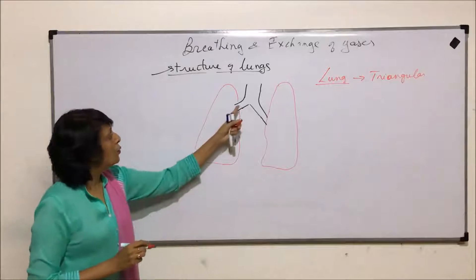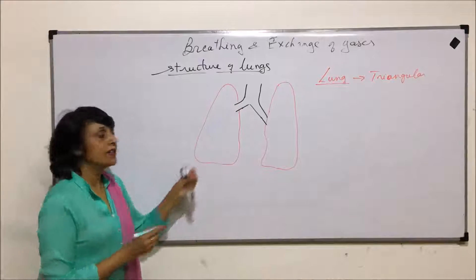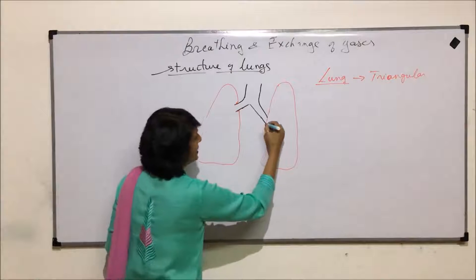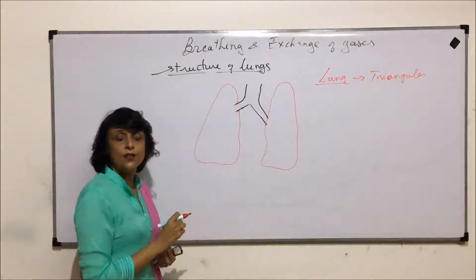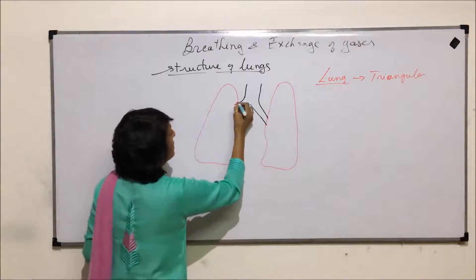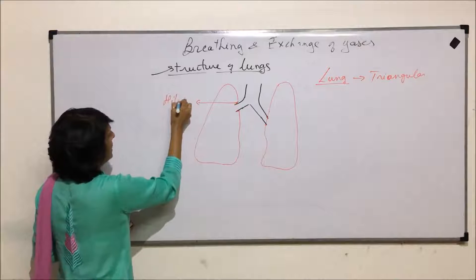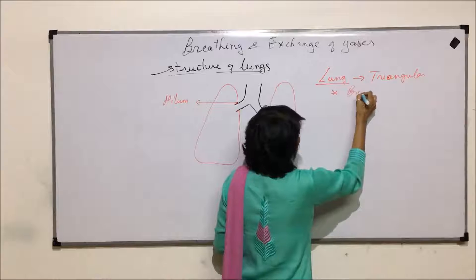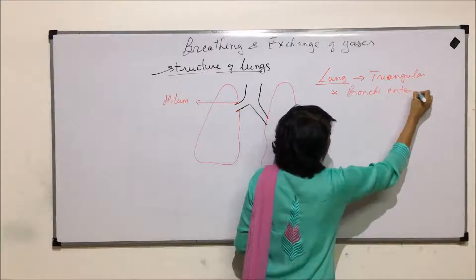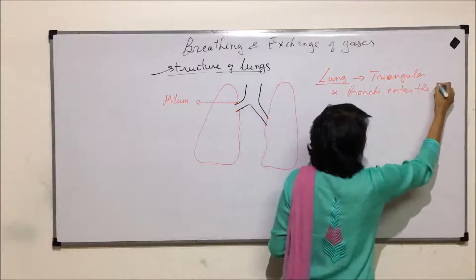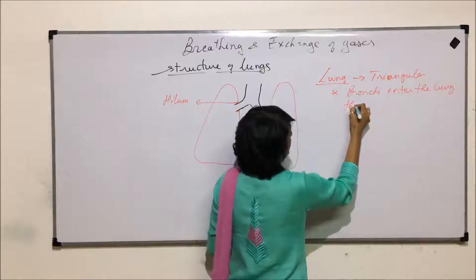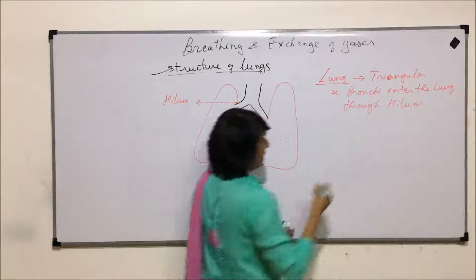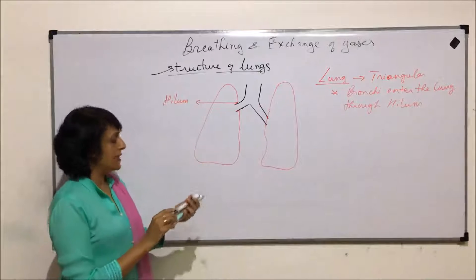The area through which the bronchi enter into the lungs is V-shaped, and this V-shaped area through which the bronchus enters is known as the hilum. So the bronchi enter the lung through the hilum. That is the point through which the bronchus is entering.